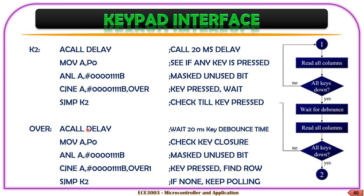Coming into this debounce logic, we call a small 20-millisecond delay to validate any key-pressing event as already explained. Again, we execute all these instructions to check if a key is still being pressed even after that particular 20 milliseconds — only then do we consider the key as being pressed. We check the same logic by masking the higher four bits and checking for any key pressing. If the key is still being pressed after 20 milliseconds, one of these bits may be logic 0, so it will not match the output value and we move on to the next section of code.